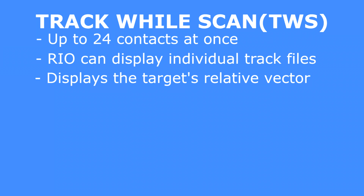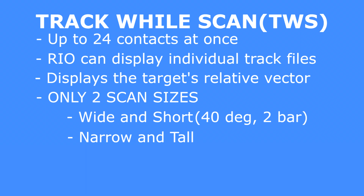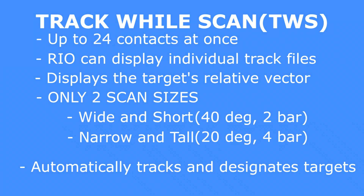You must think — wow, this is the best possible mode, why not only use this one? The answer is that TWS, while it displays the most information, is also limited to only two sizes of scan: wide and short, or narrow and tall. Wide and short is a 40-degree 2-bar search, and narrow and tall is a 20-degree 4-bar search. TWS is really only effective when actually engaging targets. Unlike other NATO aircraft where you have to slew the cursor over a target to lock them up and build the track file, the AUG-9 will automatically build track files and assign an engagement order number in descending order of closest target.